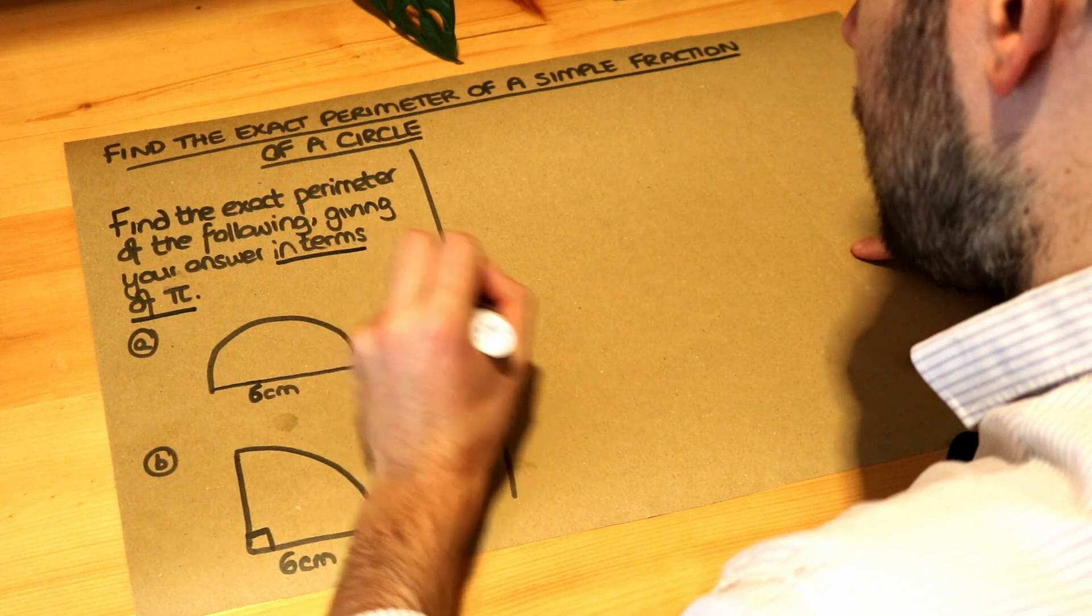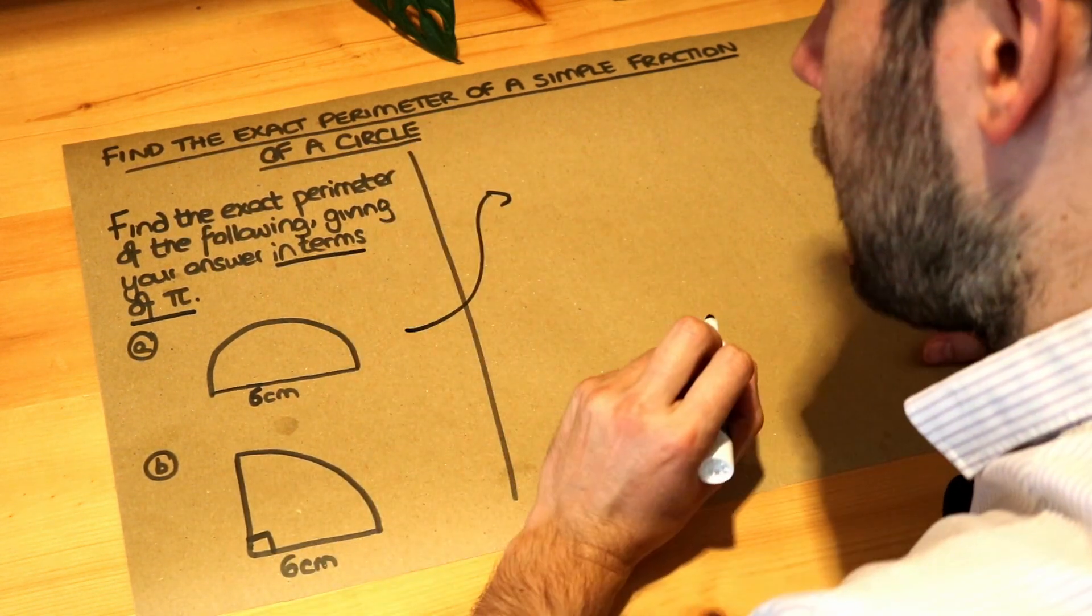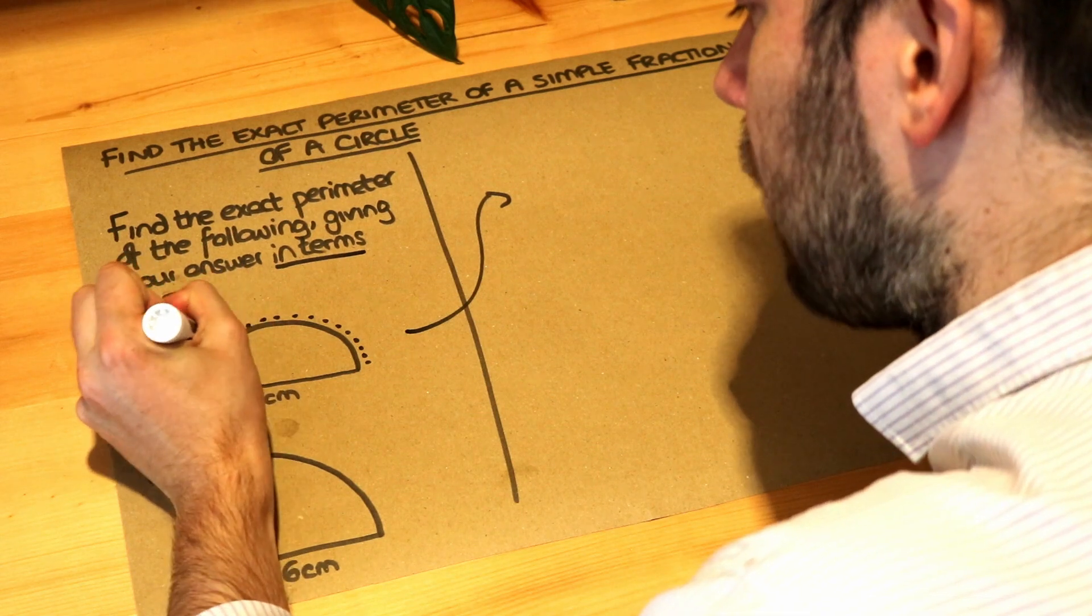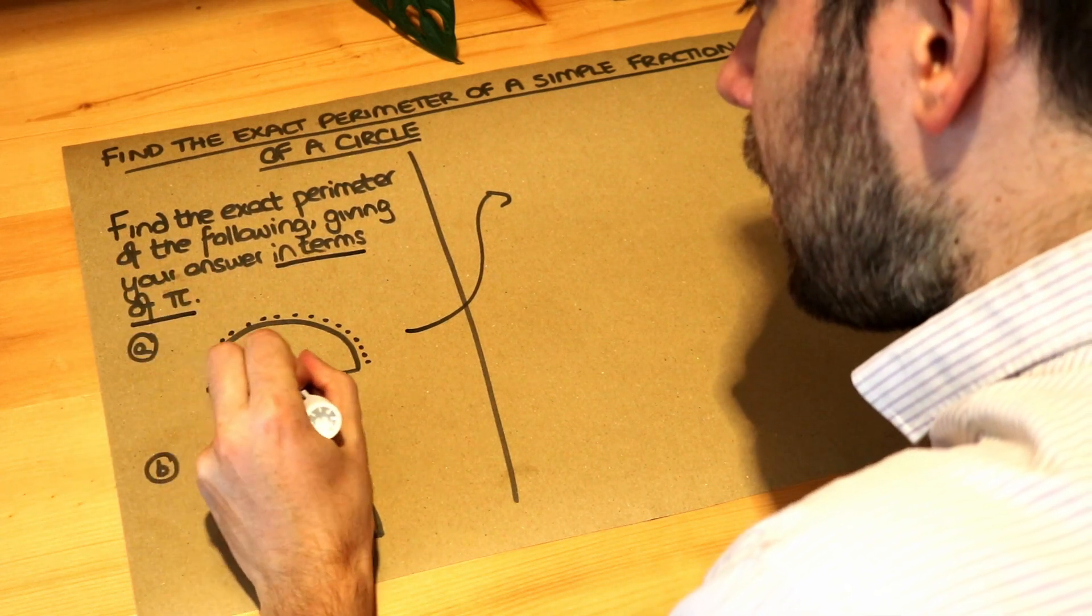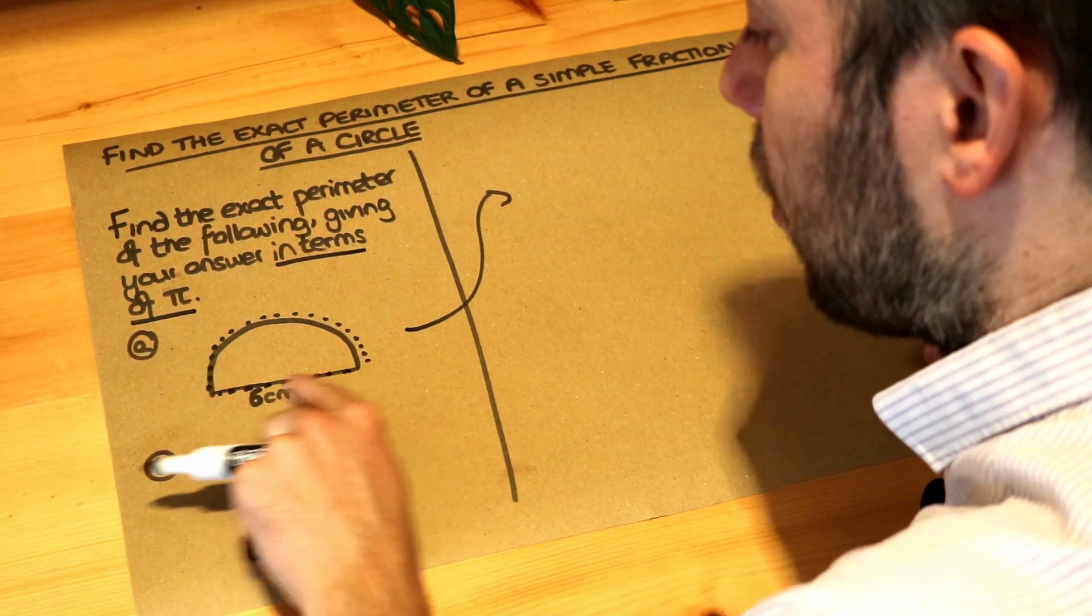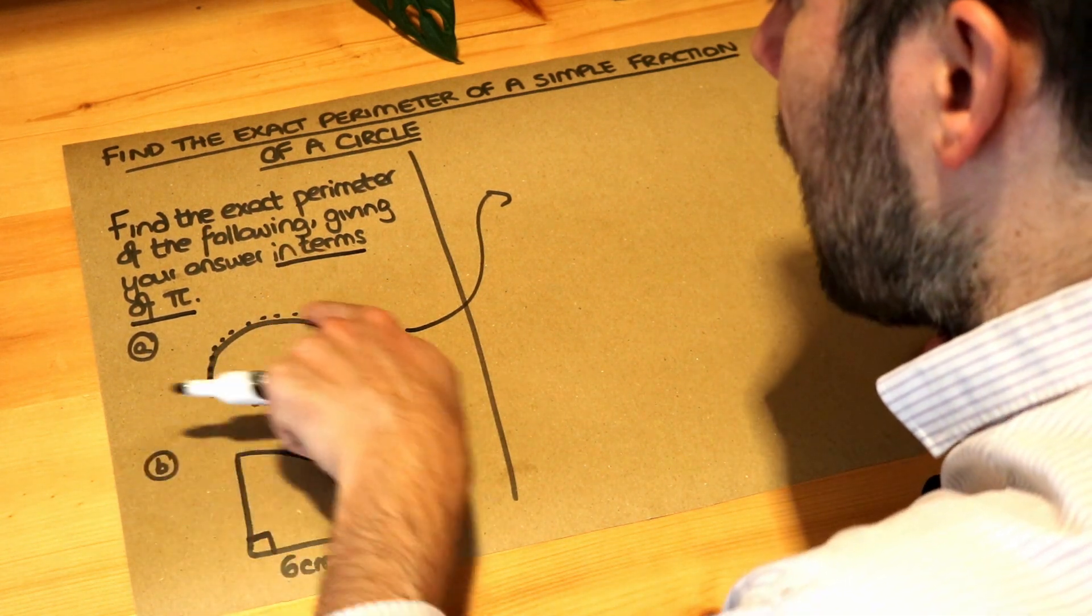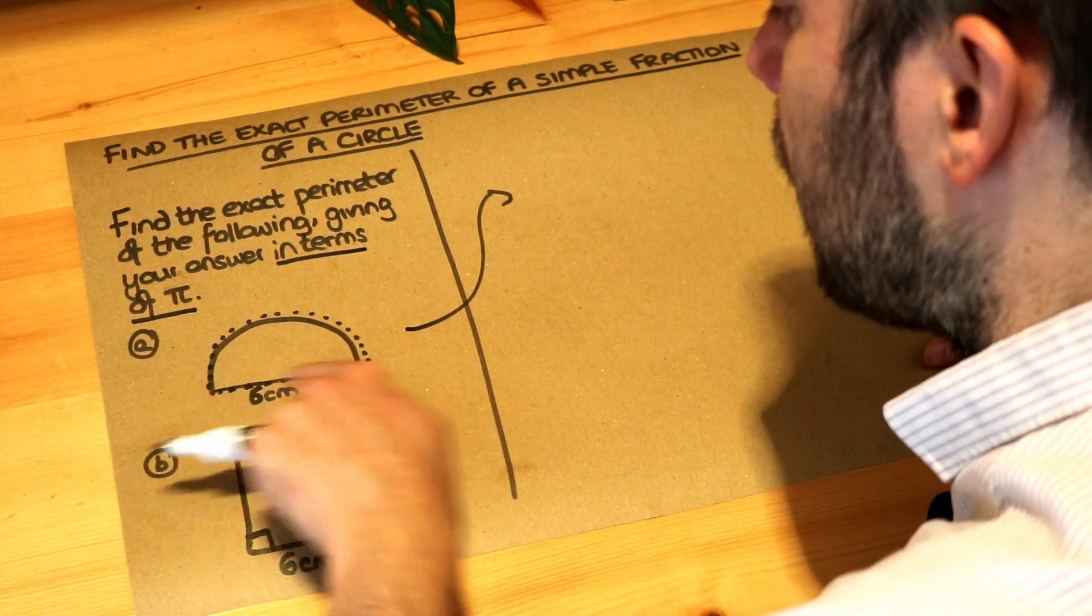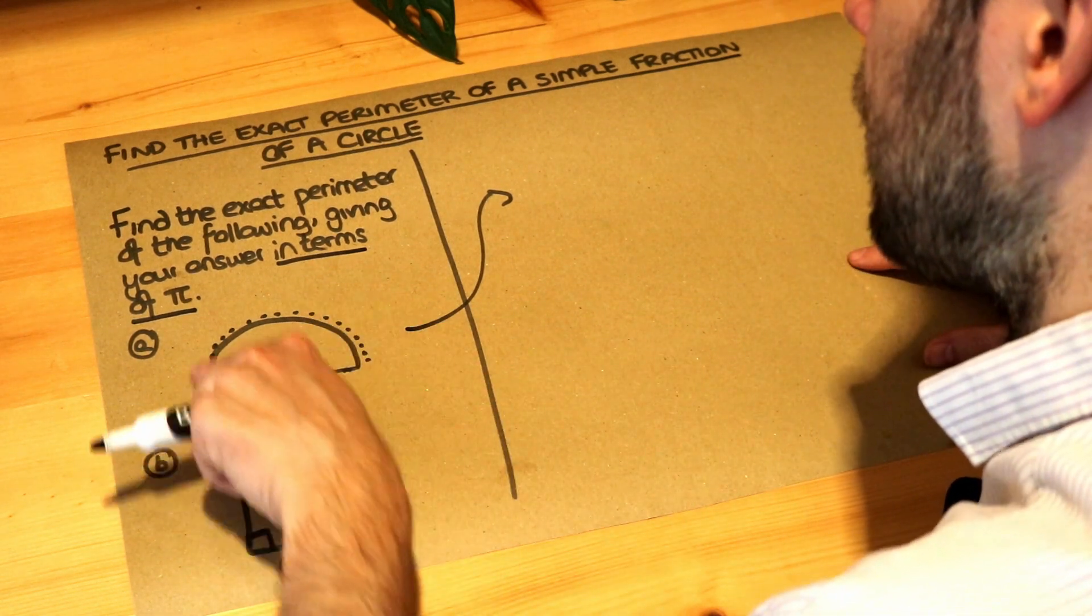Now let's do part A first. We want to find the total perimeter, so the total length around the outside of this shape. Now we can see this straight length at the bottom, we've just got that 6 centimetres, but we also need to add on the curved length. So we've got these two lengths, this top curved length and the straight one at the bottom. Let's try and find this curved length.